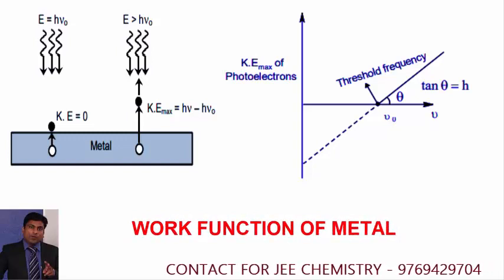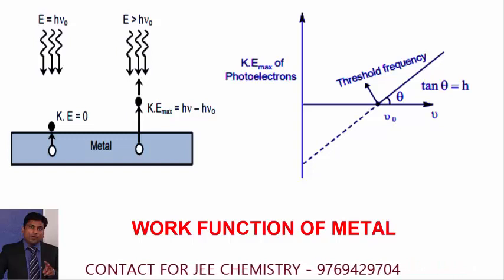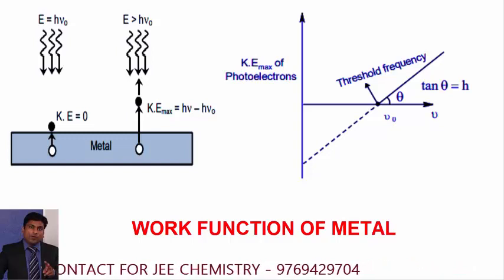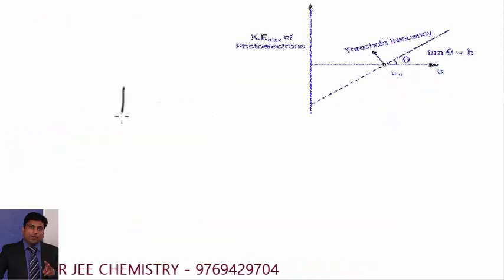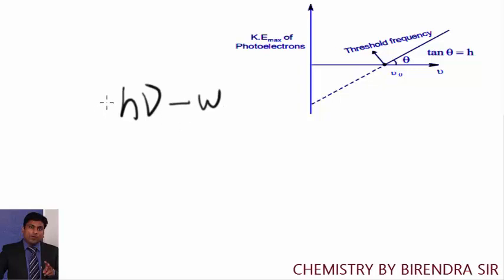Photoelectric effect is explained by particle nature of the light. If I say a photon of frequency nu strikes the metal surface, the energy of photon will be h nu. Electron gains this much of energy. Now how much energy will be consumed by the metal for the ejection of electron? Work function. We subtract work function. The remaining energy will be given to the electron and that will be in what form? Kinetic energy.